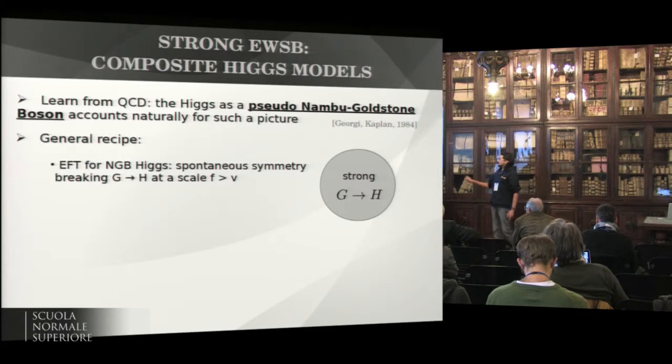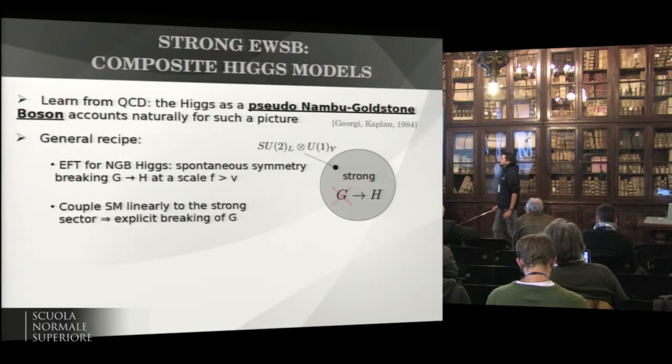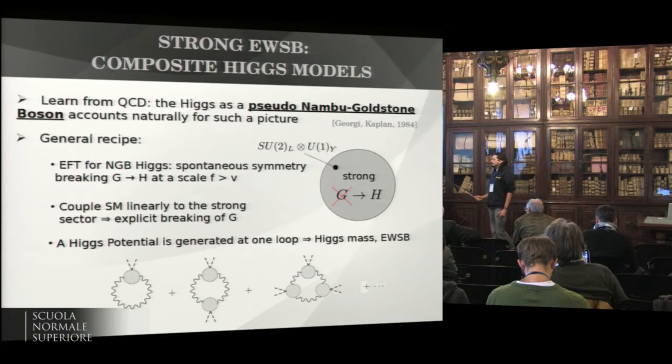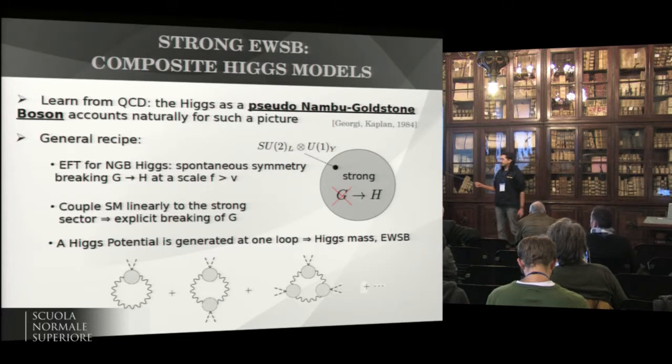Then, to this composite sector, we must couple the standard model sector, which we think as elementary. This in general will break the global G, as the standard model is not invariant under G. And so, this explicit breaking at the level of quantum correction can generate a Higgs potential at one loop, which will finally account for the Higgs mass and the electroweak symmetry breaking.